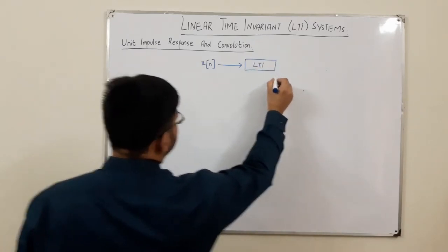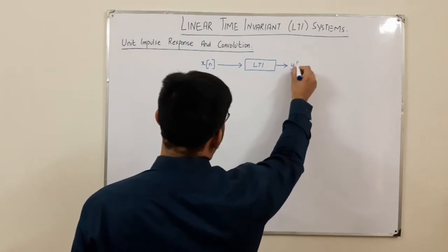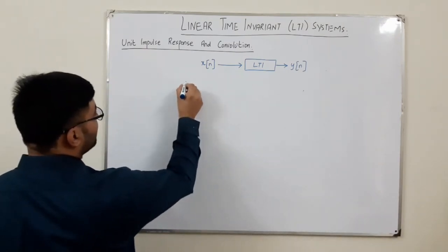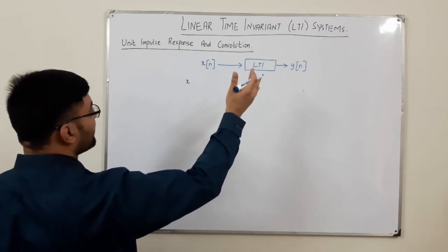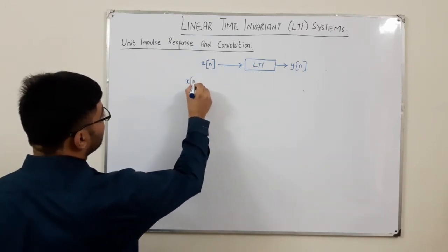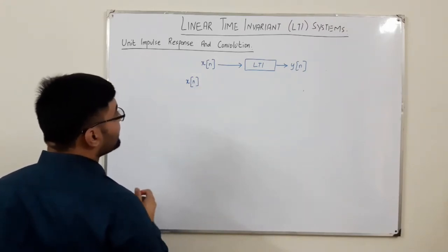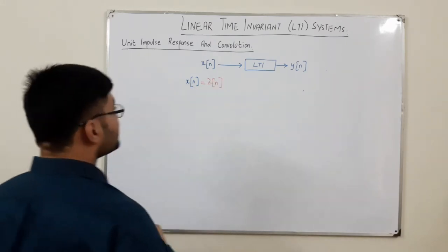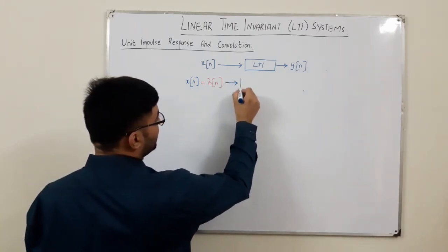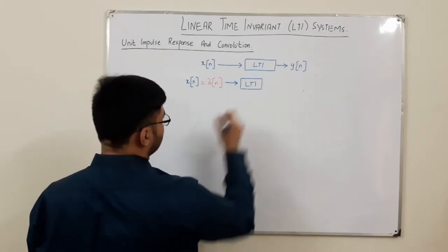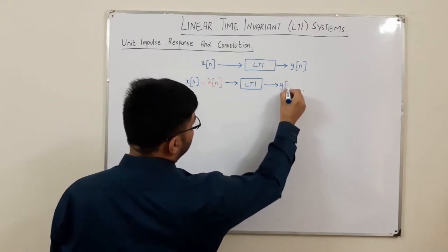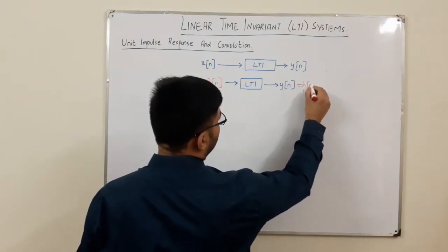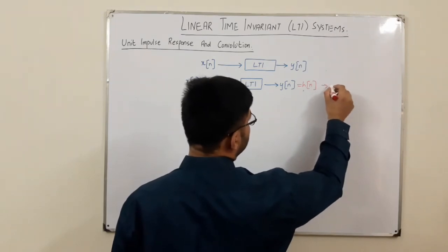This is something you know generally. Now, if you have any particular signal — that is, if your input X of n to the LTI system is Delta of n, the impulse signal — then the output Y of n in this particular case is represented as H of n, which is called the unit impulse response of the system.